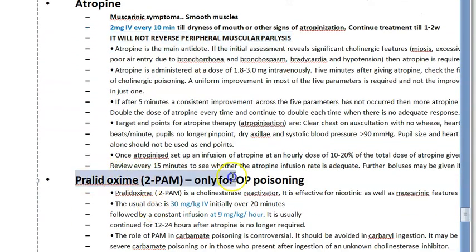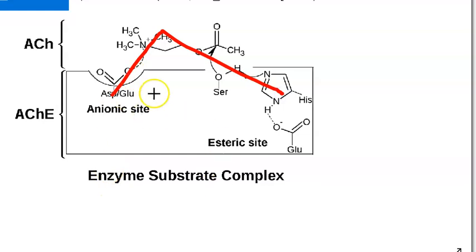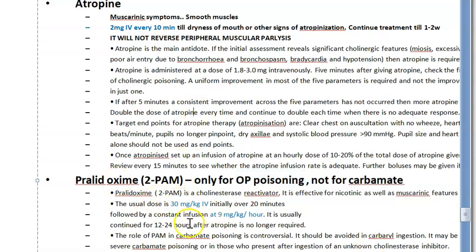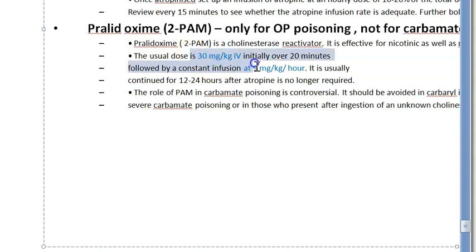Pralidoxime is only for OP poisoning, not for carbamate. Organophosphates bind to the esteratic site of acetylcholinesterase, leaving the anionic site free. Pralidoxime binds to the anionic site and dislodges the organophosphate — this works best in the early stage. For carbamate, pralidoxime does not help because carbamate binds to both sites. The dose of pralidoxime is 30mg/kg IV.